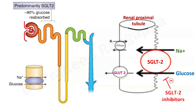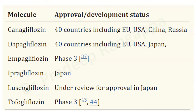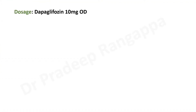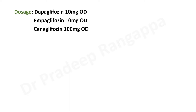The approved drugs — some of you may have heard of Dapagliflozin and Empagliflozin. These are the commonly used drugs approved worldwide. Dapagliflozin is more extensively studied and currently available in India. Other drugs include Canagliflozin, Ipragliflozin, Luseogliflozin, and Profogliflozin, which are still being tested. The dosages: Dapagliflozin is 10 mg once a day, Empagliflozin is also 10 mg once a day, and Canagliflozin is 100 mg once a day.